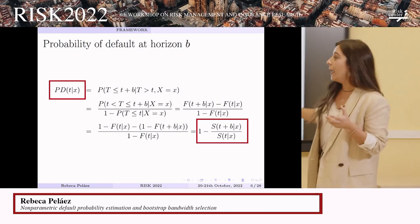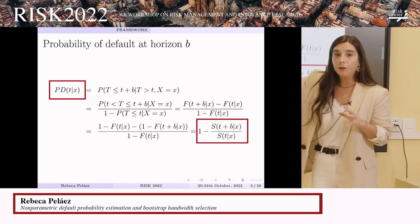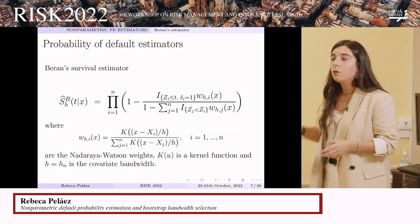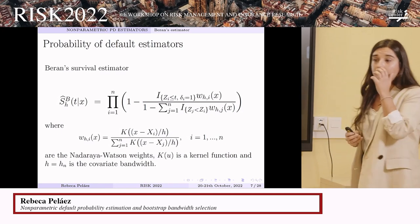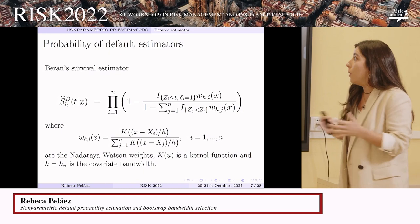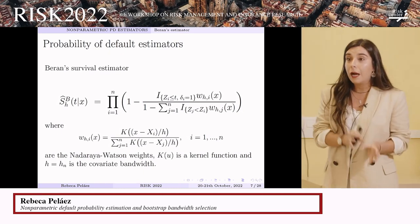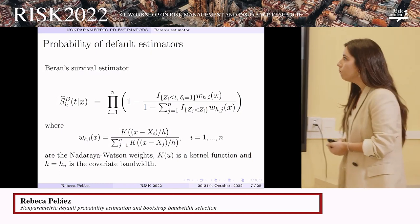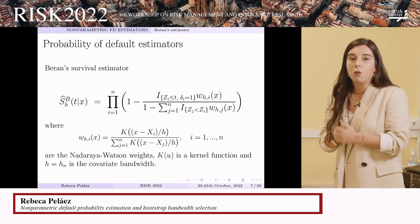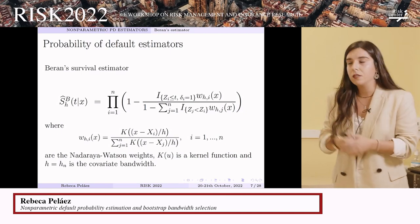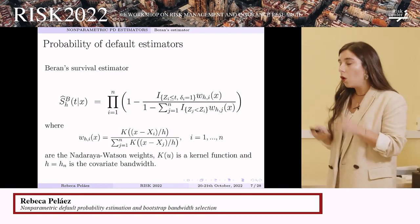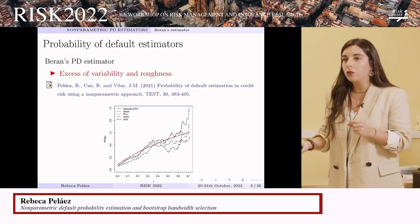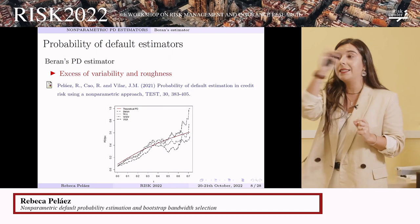Our objective is to find estimators of the conditional survival function that, through this transformation, provide proper estimators of the probability of default. We considered several conditional survival estimators; the one that provided the best results was the Beran estimator — the generalization of the Kaplan-Meier estimator to the case where there is a covariate, in this case the credit scoring. This estimator had the smallest estimation error and was also the fastest, but it had a problem common to all estimators we considered: typical conditional survival estimators are smooth functions on the covariate but are step functions on the time variable, with jumps at the censored observations.